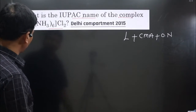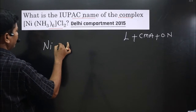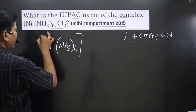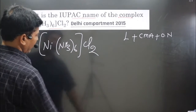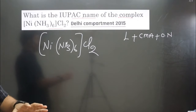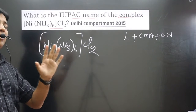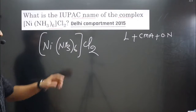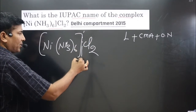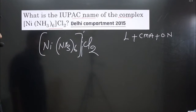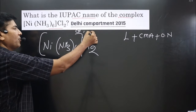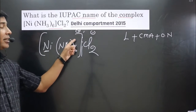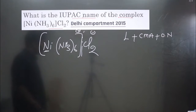Before writing the name, always identify whether the central metal atom is present in a cationic or anionic complex. For example, consider this complex: nickel with NH3 as a neutral ligand, giving [Ni(NH3)6], and Cl2 as the counter ion outside. The species inside the coordination bracket cannot be separated — the counter ion is outside. The first part is always positive, the second always negative.